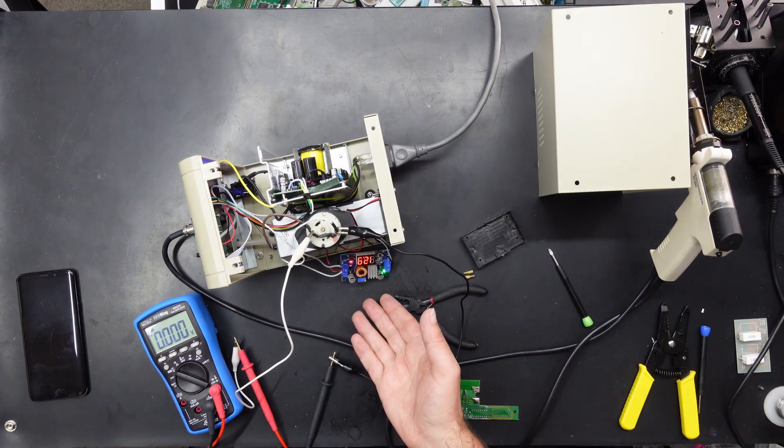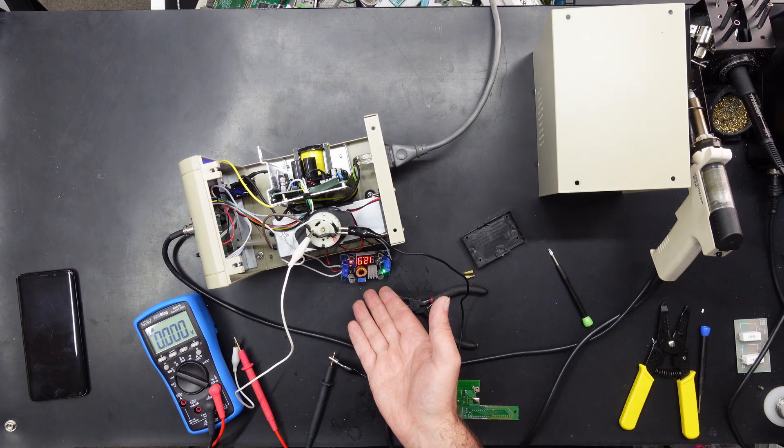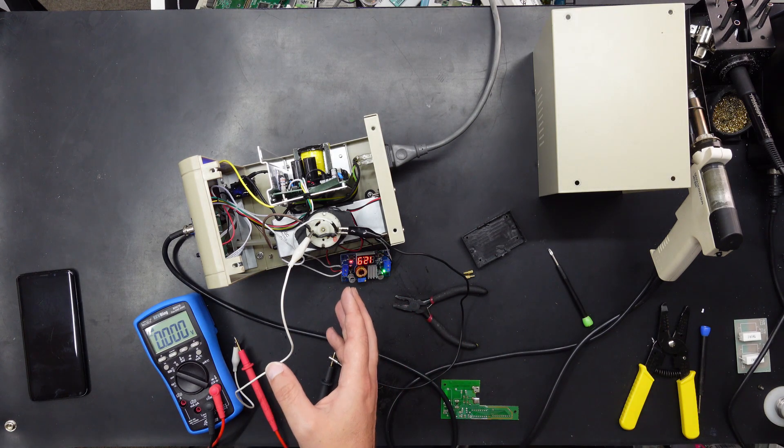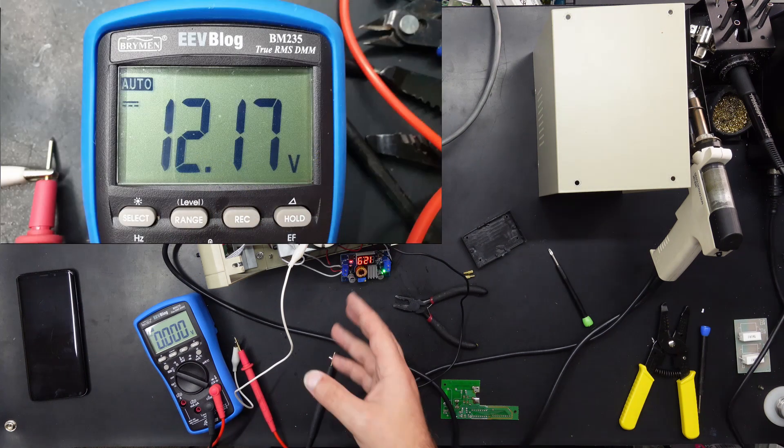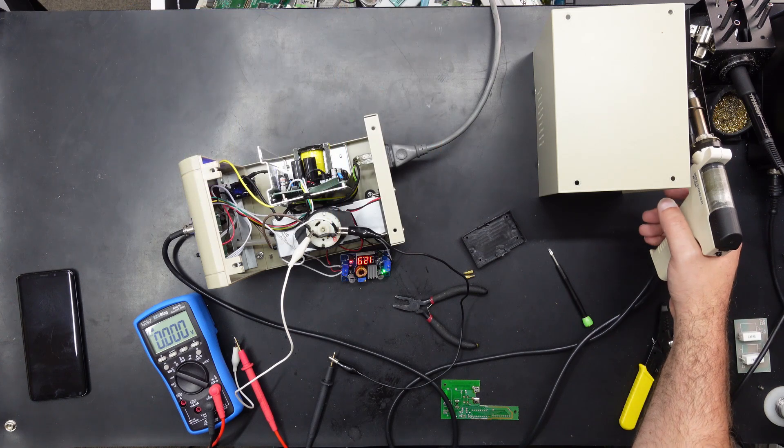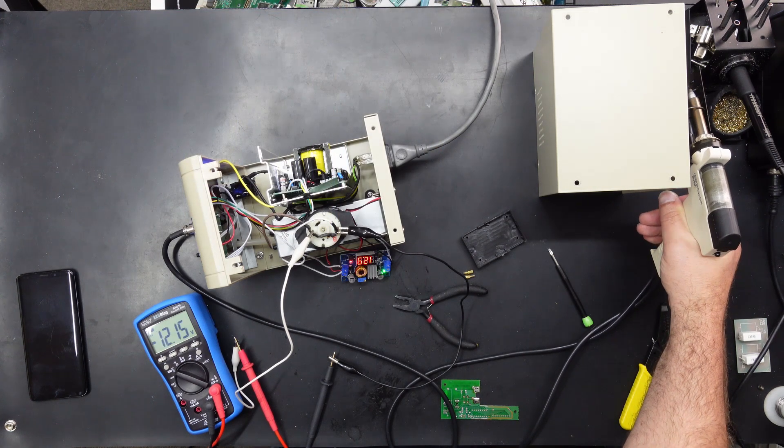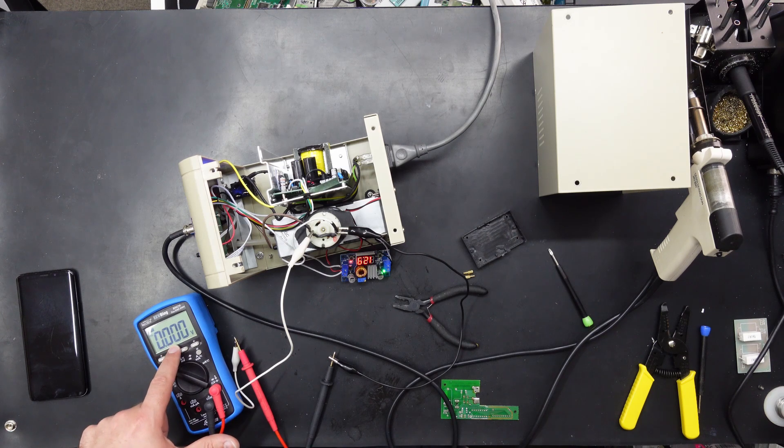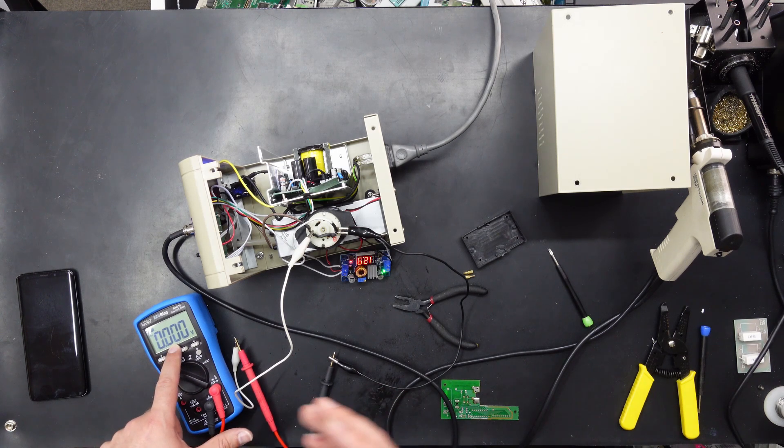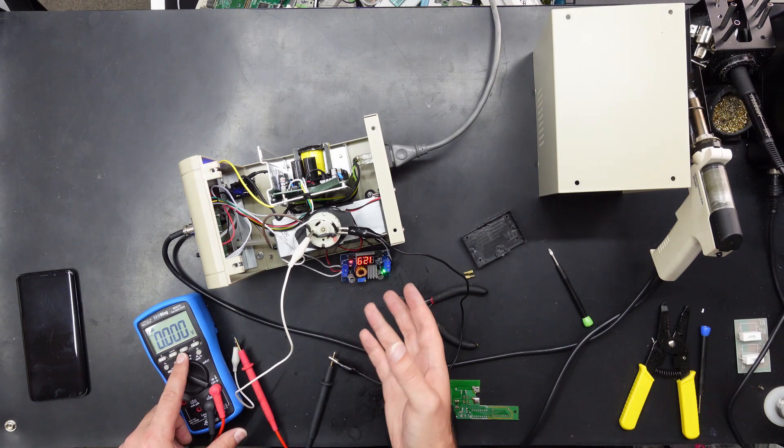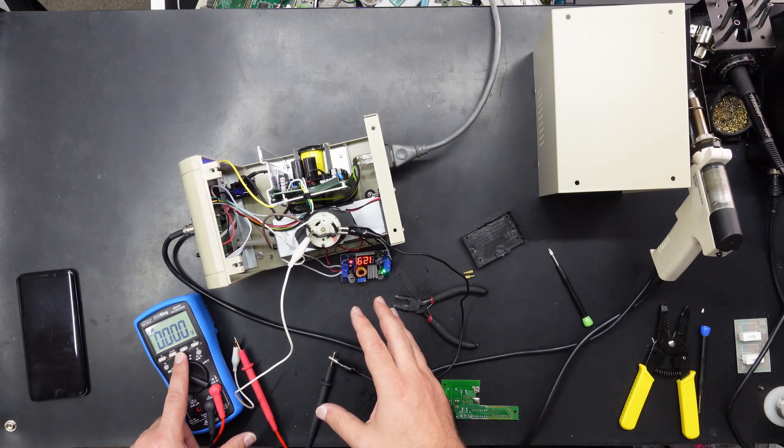Alright so I've hooked up the buck converter as you can see it's putting out 12.9 volts but the original motor was receiving about 12.17 when it was unrestricted so pull the trigger and hopefully as you saw on the multimeter we're getting 12.15 volts so it's pretty much equal to what the old power supply was giving it.